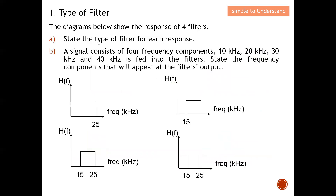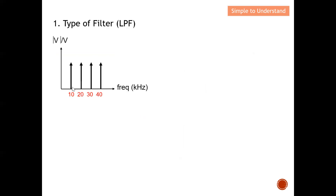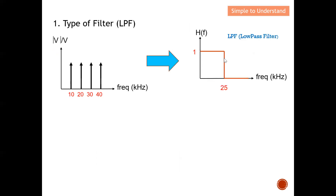Now I'll show you an example. The diagram below shows the response of four filters. Firstly, state the type of filter for each response. A signal consists of four frequency components — 10 kHz, 20 kHz, 30 kHz, and 40 kHz — is fed into the filter, and you state the frequency components that will appear at the output. The original signal with these four components is fed into a low pass filter with a cutoff frequency at 25 kHz.